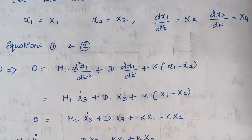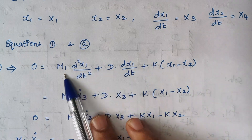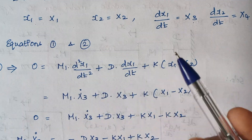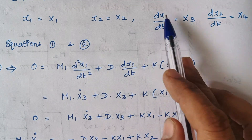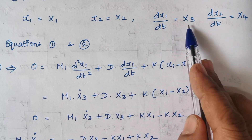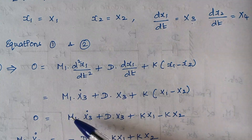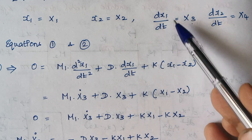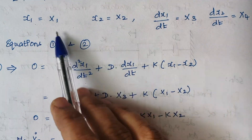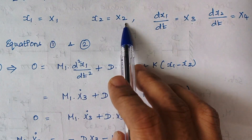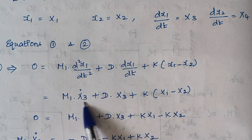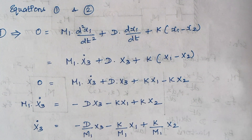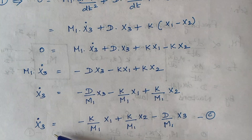Now we are rewriting equations 1 and 2. In equation 1, d²x1/dt² can be written as ẋ3, because dx1/dt is x3 and when you differentiate again it becomes ẋ3. So m1·ẋ3 + d·x3 + k(x1 − x2) = 0. From this expression we can find ẋ3 by rearranging the terms. Finally we have an expression for ẋ3.